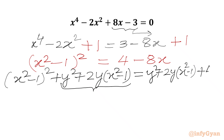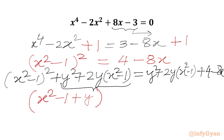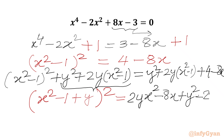So we will add the same to the RHS: y² + 2y(x² - 1), then we have 4 - 8x. Now the left hand side is again one perfect square. If we assume x² - 1 = a, y = b, then 2y(x² - 1) is the 2ab term, giving a² + b² + 2ab = (a + b)². So LHS is (x² - 1 + y)². RHS is a quadratic in x: 2yx² - 8x + y² - 2y + 4. Let us call this equation number 1.